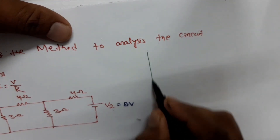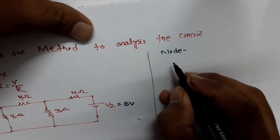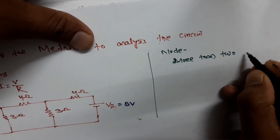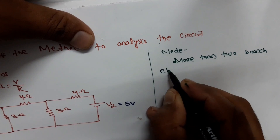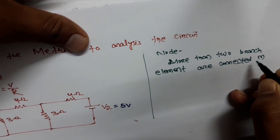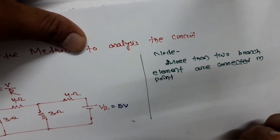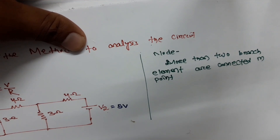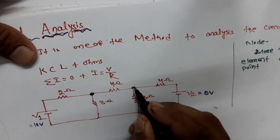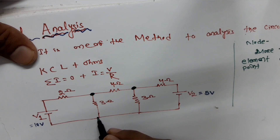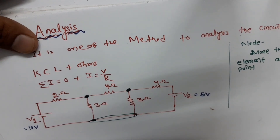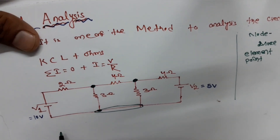First, our job is to find the number of nodes. Let's identify what a node is. A node means a point where 2 or more than 2 branch elements are connected. Looking at the circuit, this one is node 1, this one is another node, and there is also one more — a total of 3 nodes.